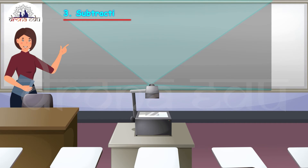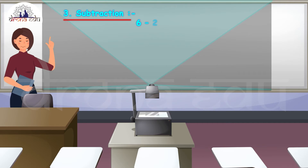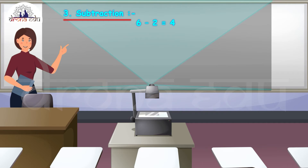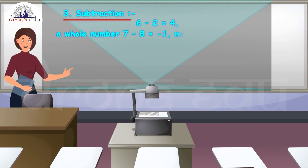Now let us consider subtraction and see what we get. Let me take the numbers 6 and 2. If I do 6 minus 2, I am going to get 4. So when I subtracted these two whole numbers, I got a whole number as the answer.